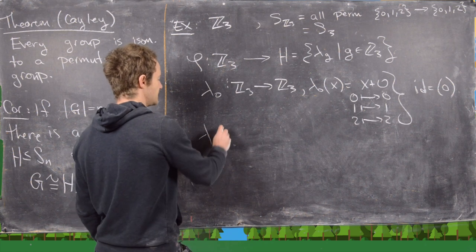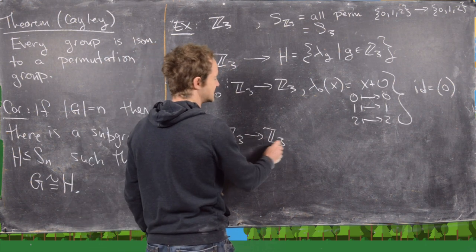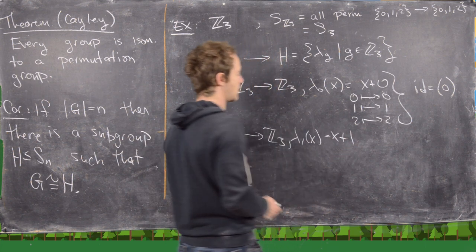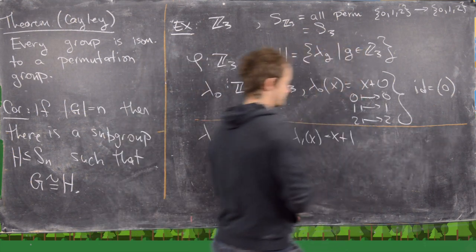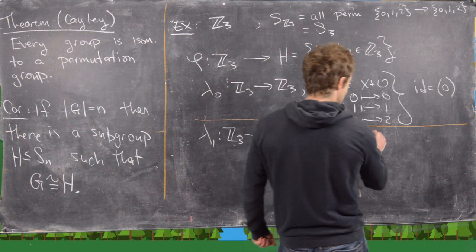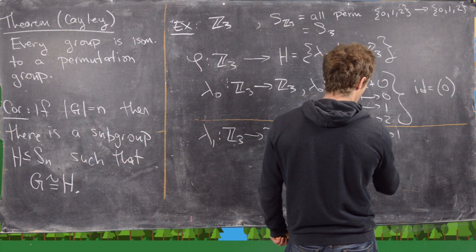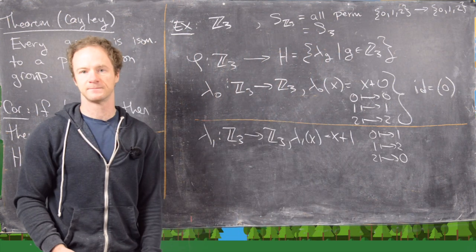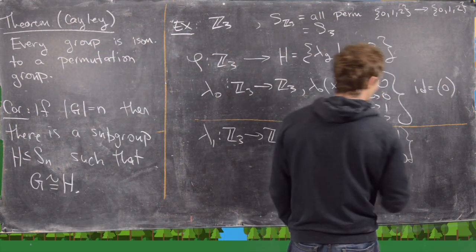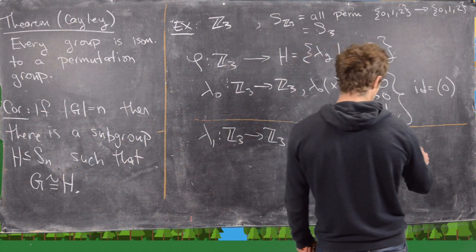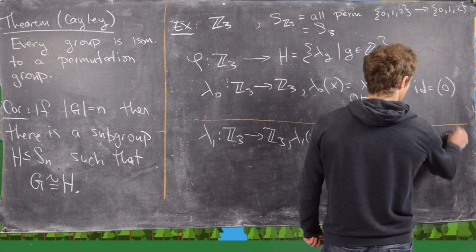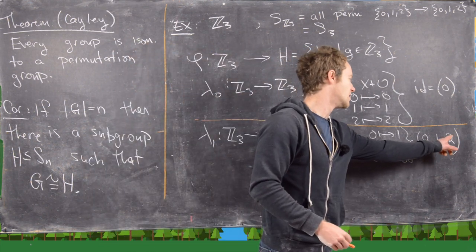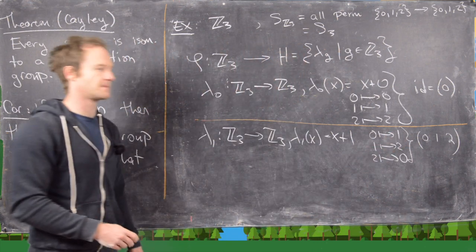Now let's look at λ₁. That's a map from Z₃ to Z₃ where λ₁(x) equals x plus 1, working mod 3. So that takes 0 to 1, 1 to 2, and 2 to 2 plus 1 which is 0 mod 3. So that's equal to a 3-cycle, and that 3-cycle is (0 1 2). By cycle notation, this means 0 is sent to 1, 1 is sent to 2, and 2 is sent back to 0.